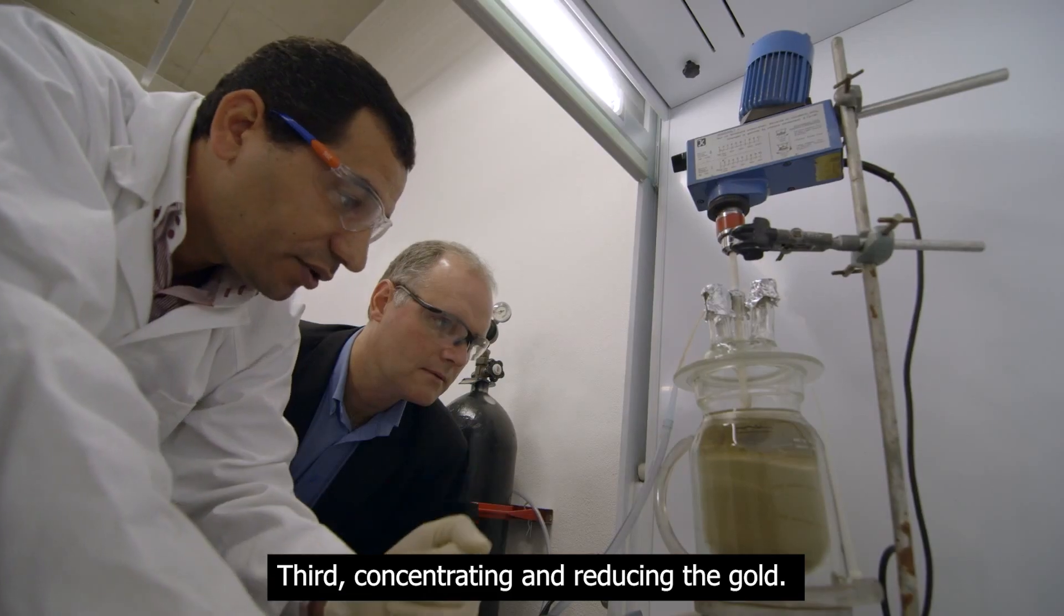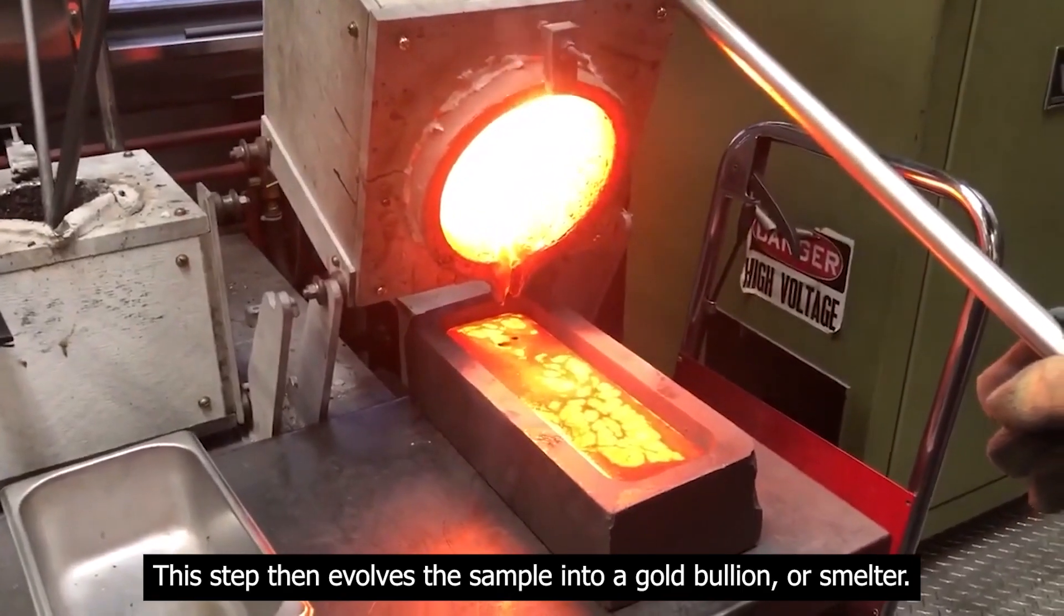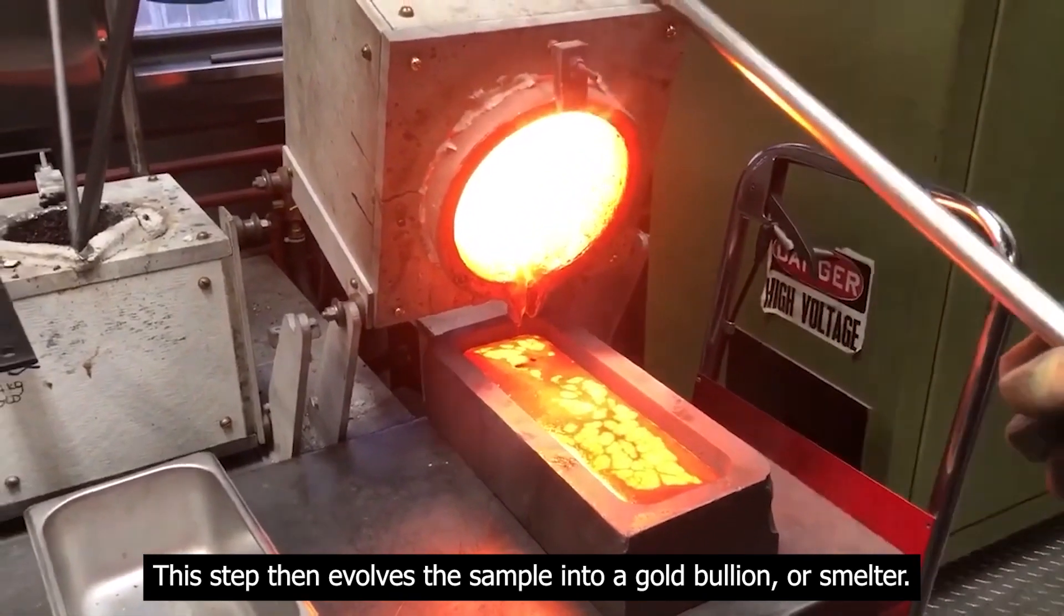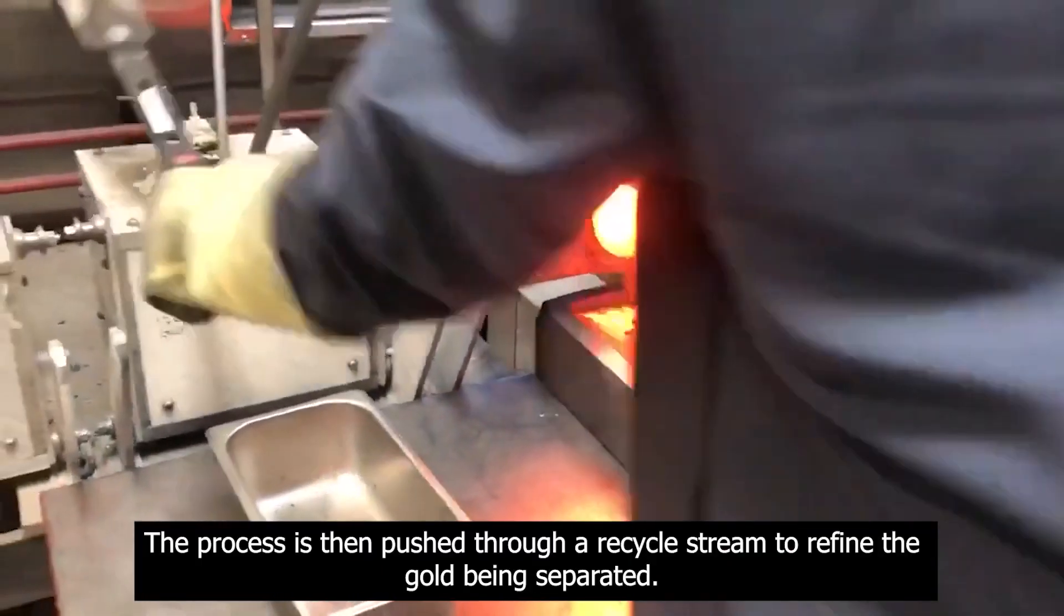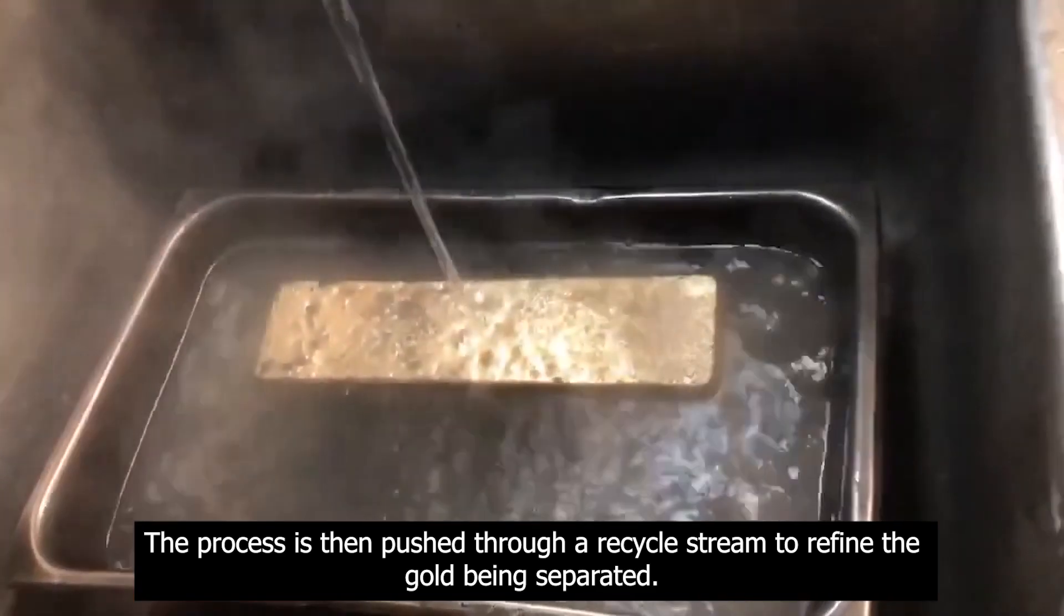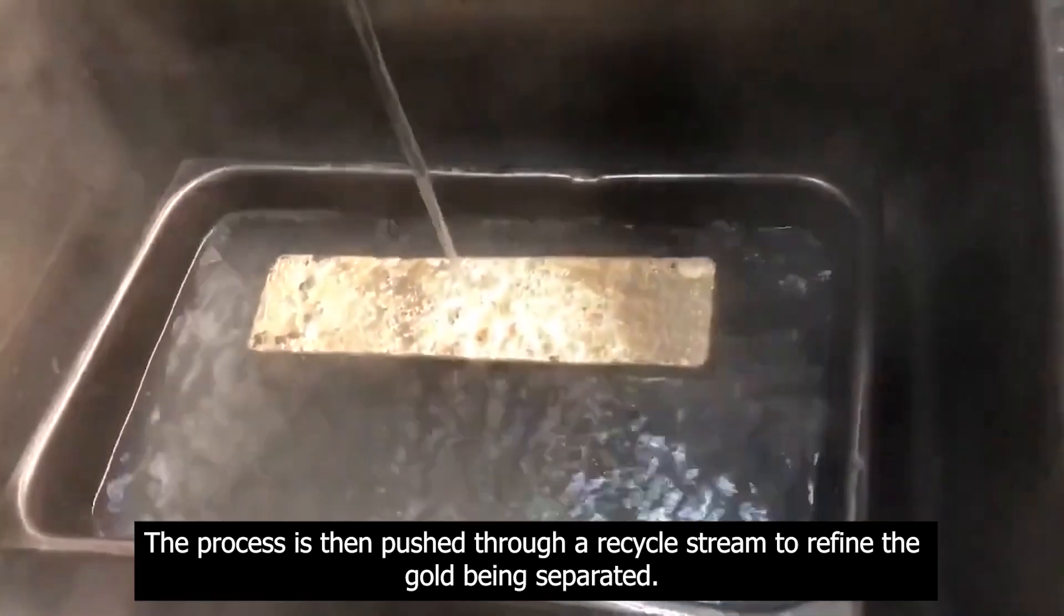Third, concentrating and reducing the gold. This step then evolves the sample into a gold bullion or smelter. The process is then pushed through a recycle stream to refine the gold being separated.